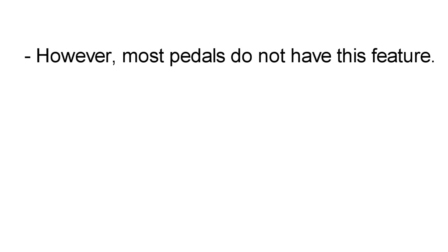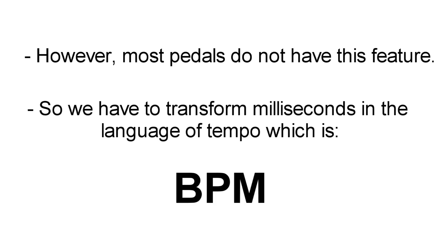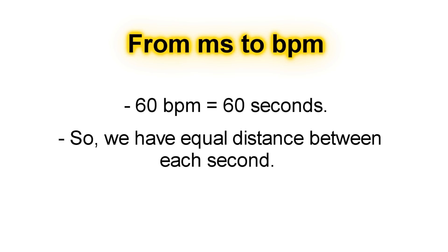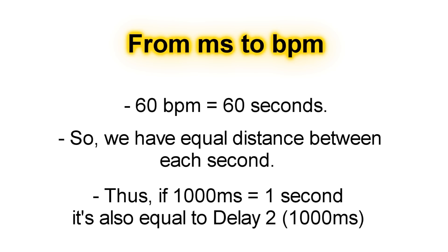The problem is that most delay pedals do not show milliseconds, so we have to transform our milliseconds into the language of tempo, which is BPM — beats per minute. We can all agree that 60 BPM equals 60 seconds, because 1 BPM equals 1 minute and there are 60 seconds in a minute. So 60 BPM equals 60 seconds with equal distance between each second. Thus, 1000 milliseconds equals 1 second, which is also equal to the time needed for delay 2.